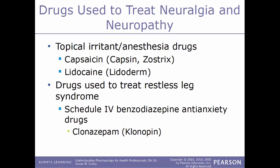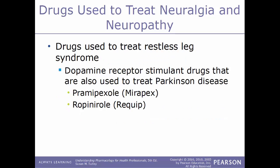For restless leg syndrome specifically, there are two main kinds of drugs: a Schedule IV benzodiazepine anti-anxiety drug such as clonazepam (Klonopin), and dopamine receptor stimulant drugs also used to treat Parkinson's disease, such as pramipexole (Mirapex) and ropinirole (Requip).